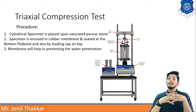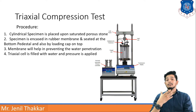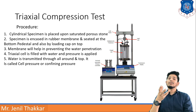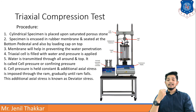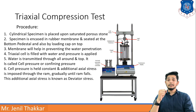The rubber membrane prevents penetration of water into the soil specimen. The triaxial cell is then filled with water and pressure is applied — water pressure is applied from all sides circumferentially and from the top. This is called the cell pressure, or confining pressure, as it confines the soil specimen. The cell pressure is held constant, and then an additional axial stress is imposed through a ram on the top which gradually compresses the specimen.